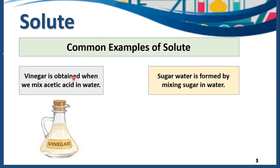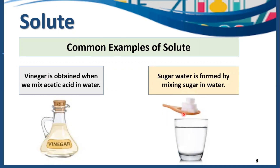Then sugar water is formed by mixing sugar into water. Here the amount of sugar is less than the amount of the solvent, and moreover this sugar is dissolved into this water. That's why sugar is a solute here.